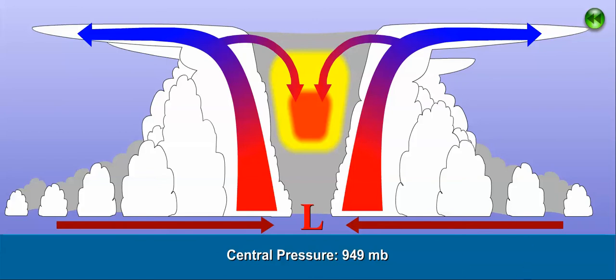This feedback loop can continue if a hurricane remains in an environment with favorable ingredients, but if one or more of the ingredients for tropical cyclones becomes unfavorable, thunderstorms near the center either weaken or become disrupted, which ultimately leads to increasing surface pressure and a weakening tropical cyclone.